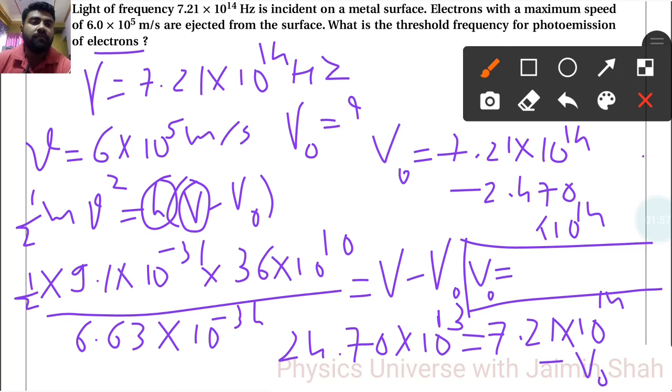ν₀ = 4.74 × 10¹⁴ Hz. That is our threshold frequency.